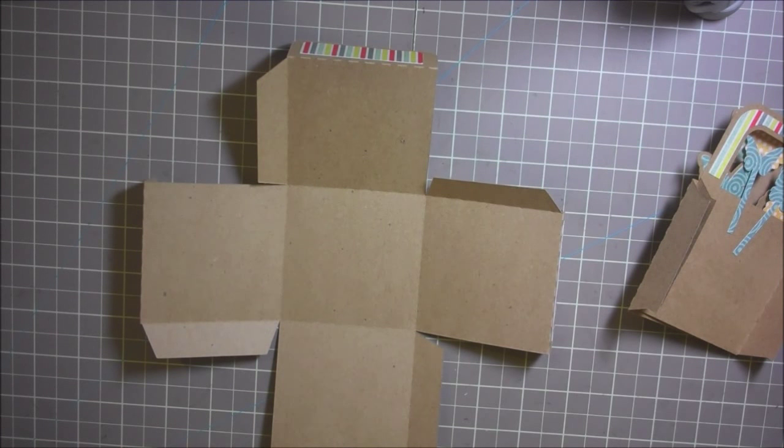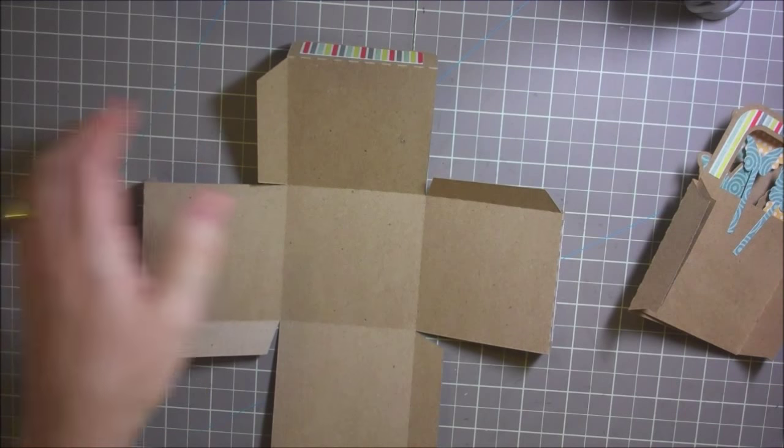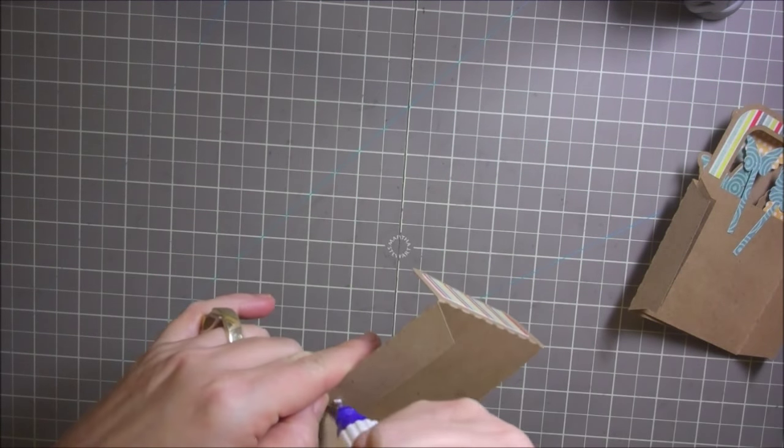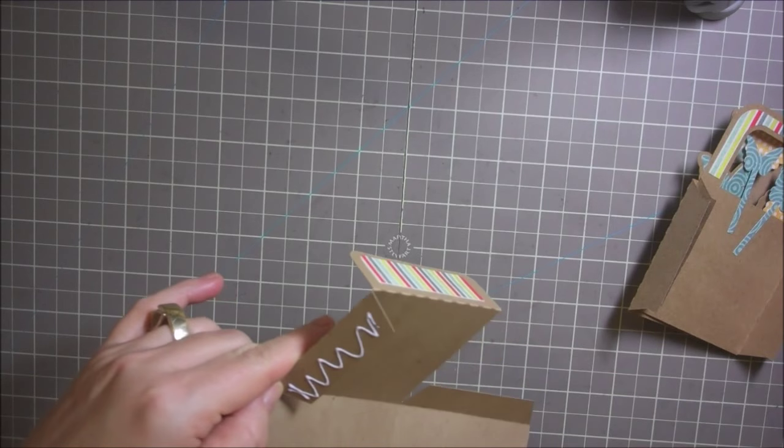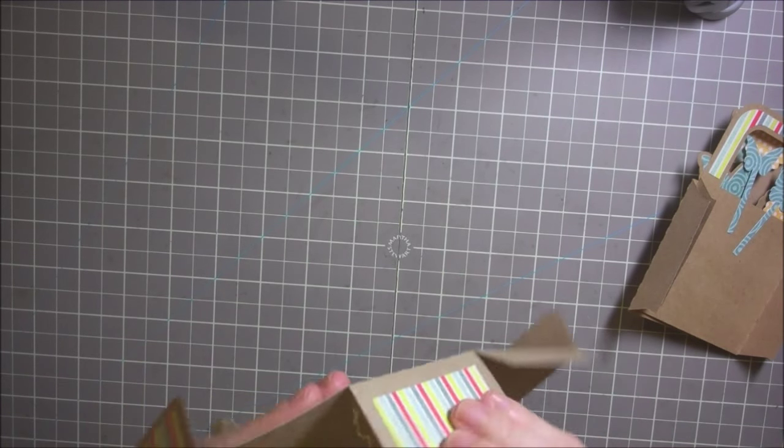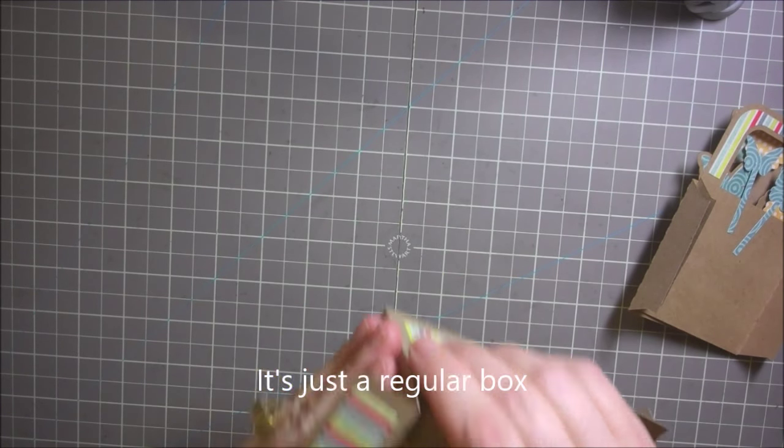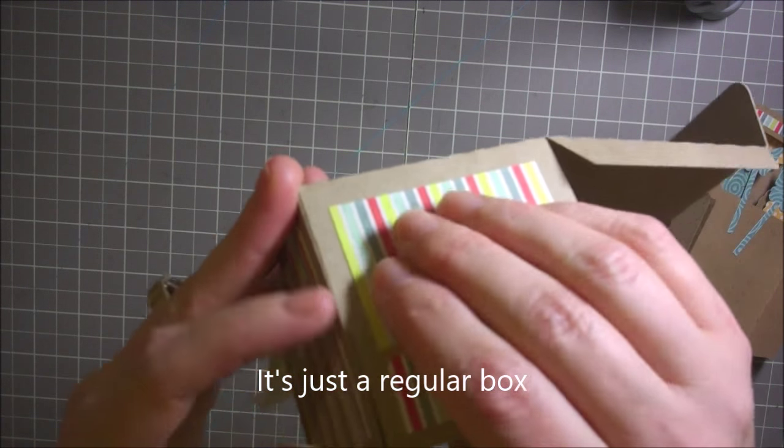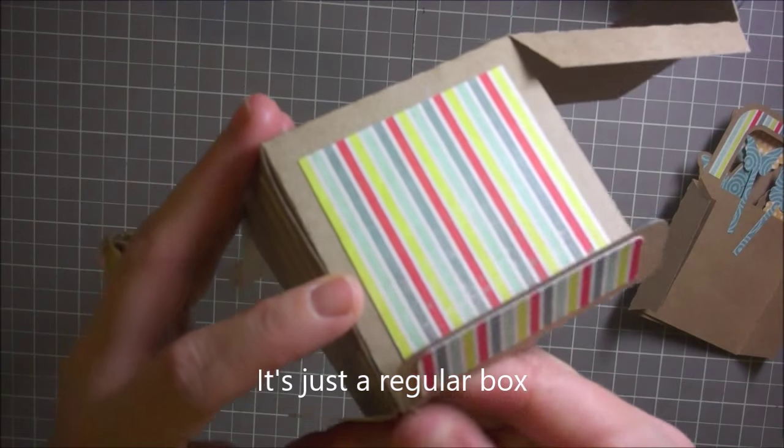Let's get started in assembling this box. I'm using some of my scotch adhesive. This is gonna go together more along the lines of an explosion box than a regular box, so I'm just gonna glue this right here and put this here.